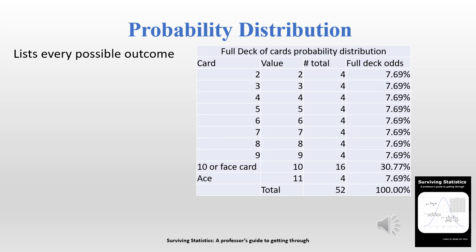Remember, a probability distribution lists every possible outcome. Here is a table with a probability distribution of a full deck of cards. We can get values from two to 11, with the ace counting as 11 in blackjack. There are four possible ways to get a two because there are four suits. We've lumped all the 10s and face cards together, giving 16 possible ways to get a 10 or face card. Each specific outcome has about a 7.69% probability, and the lumped 10-value group has 30.77%. All probabilities add up to 100%.